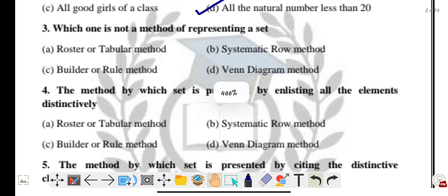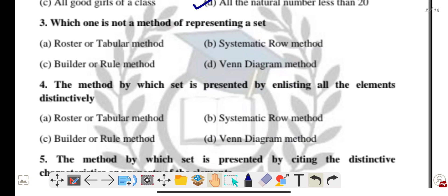Question number three: which one is NOT a method of representing a set? Options are roster or tabular method, systematic method, builder or rule method, and by Venn diagram method. The correct answer is option B — Venn diagram is not a method of representing a set.